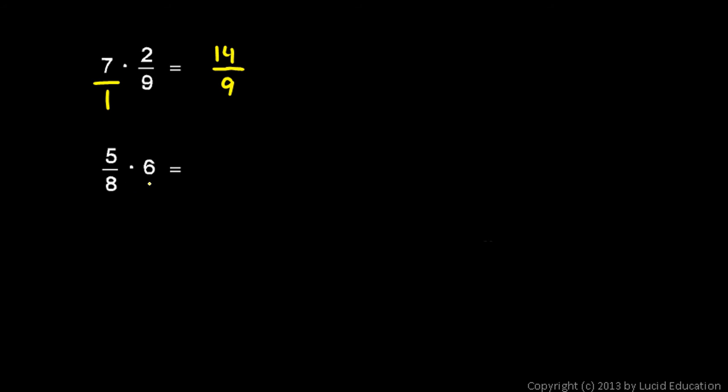5 eighths times 6. Just remember that 6 is the same as 6 over 1. I mean, you could go ahead and write it out as 5 eighths times 6 over 1 if you want to. Or you could just make your 6 a little fraction right here, 6 over 1. Or you could just remember that 6 is the same thing as 6 over 1 and that 6 is really in the numerator. And so the answer is 5 times 6 which is 30 over 8 times 1 which is just 8.